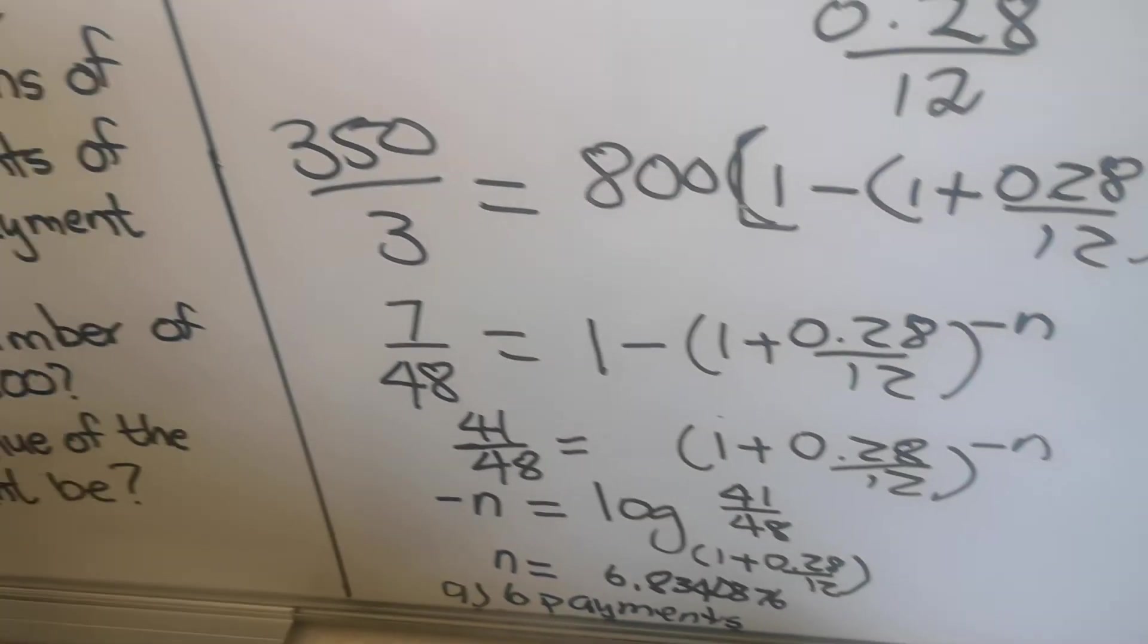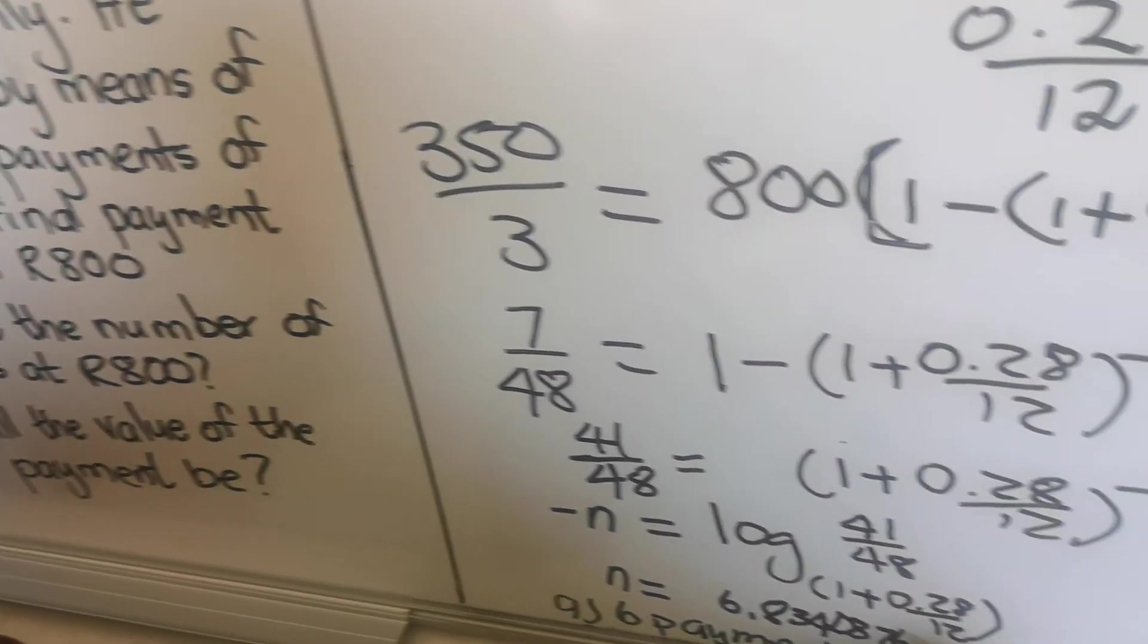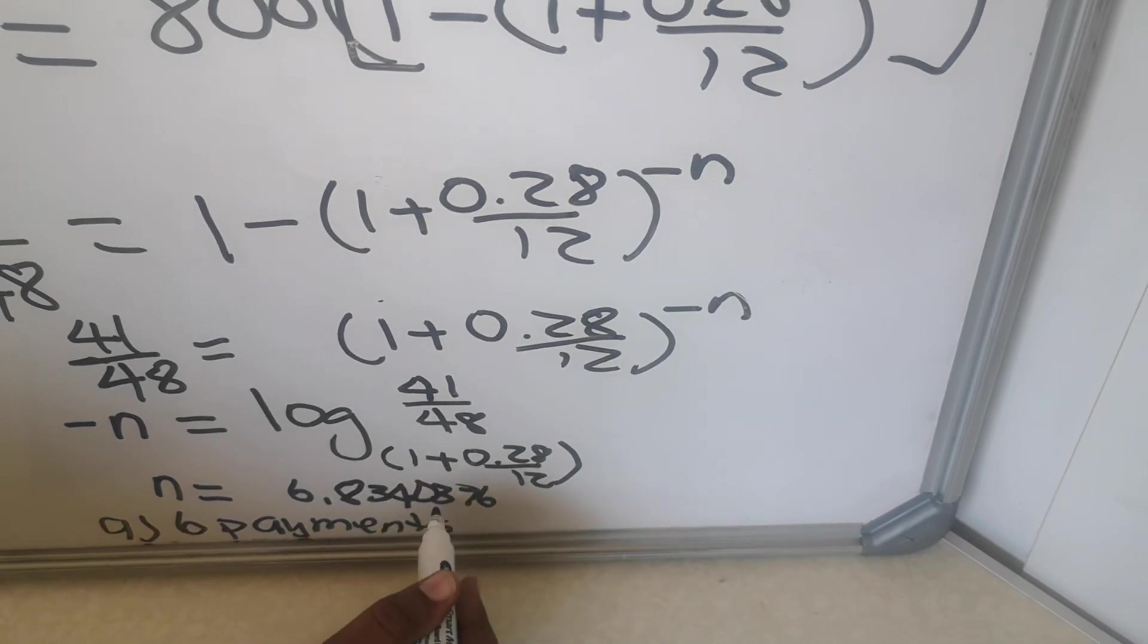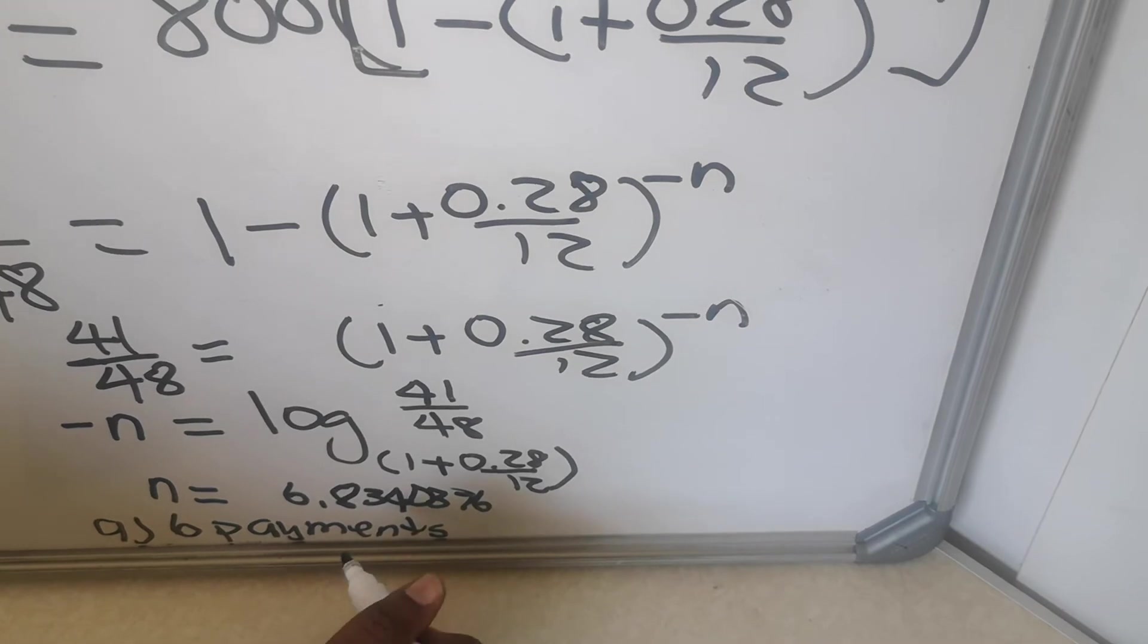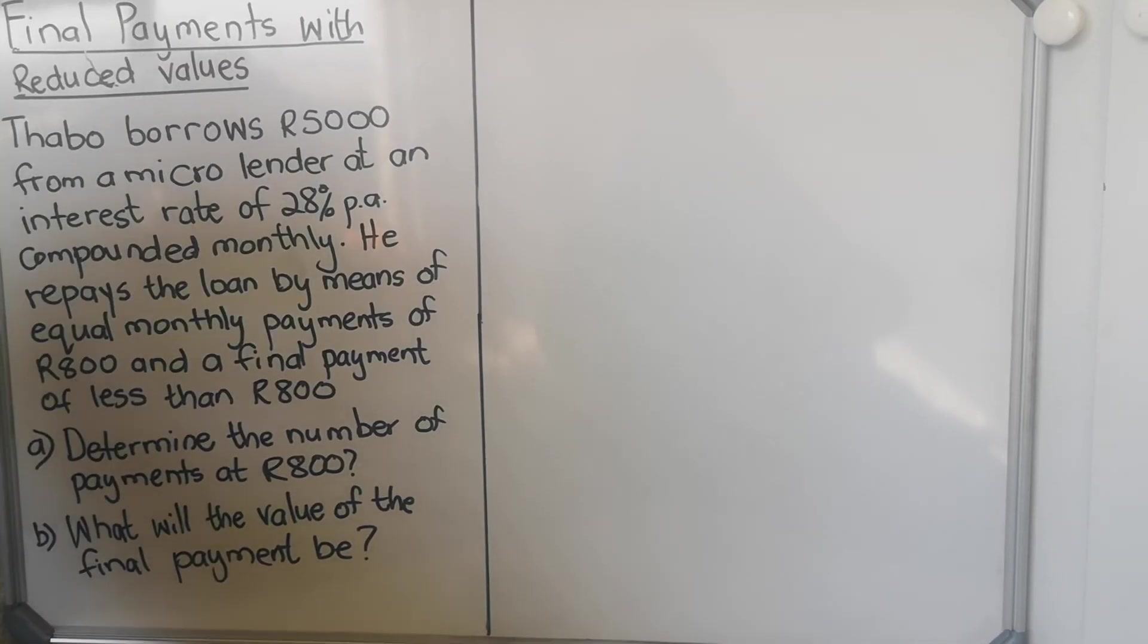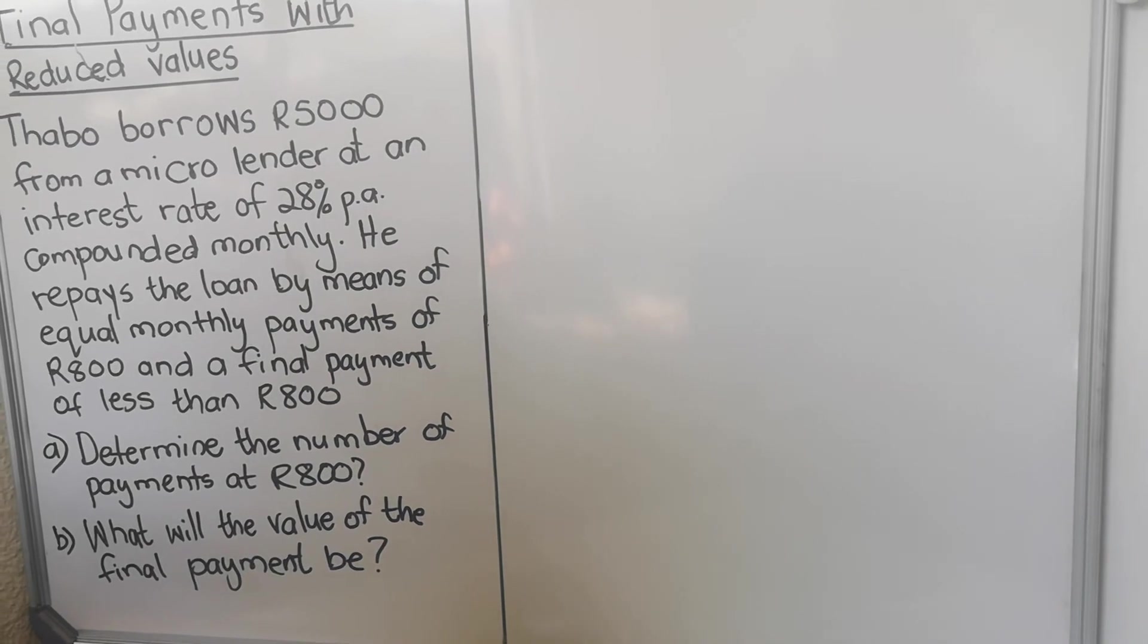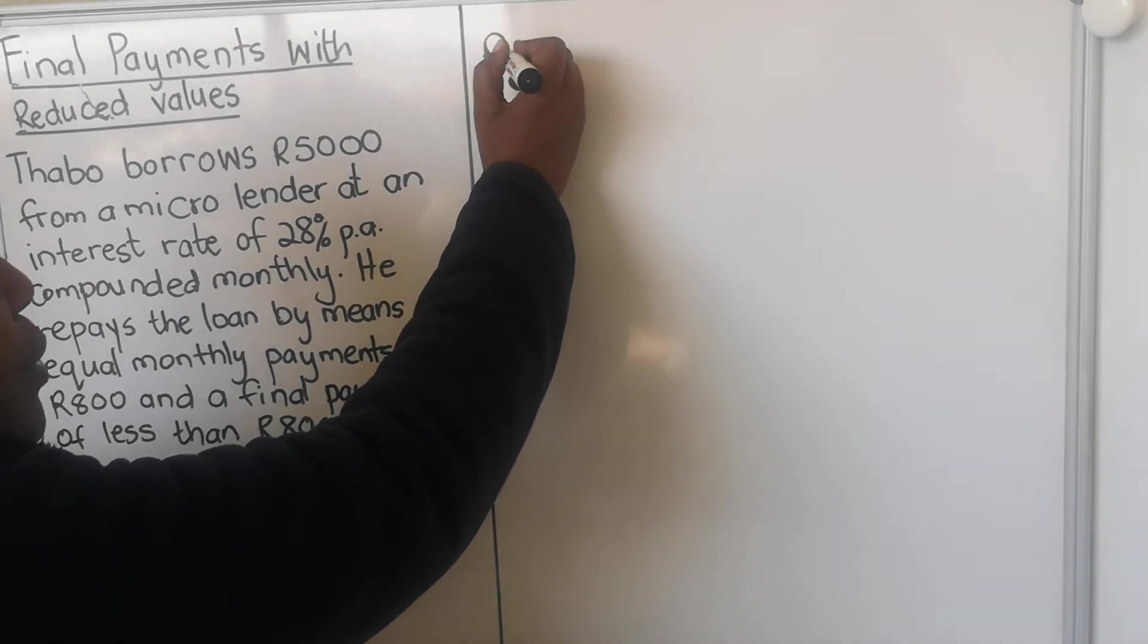And for your b, they say what will the value of the final payment be? The final payment, you use the fraction part of your answer, of your n. You use the fraction part to find how much will the last payment be. For number b, the final payment, you use the future value. You write the future value formula.